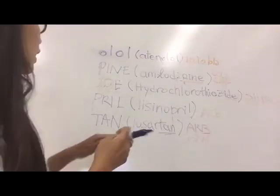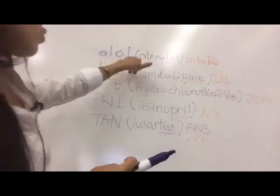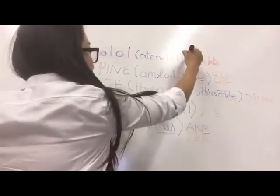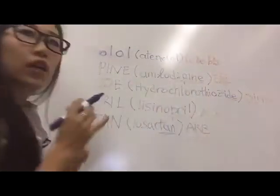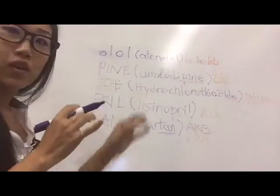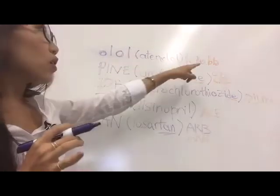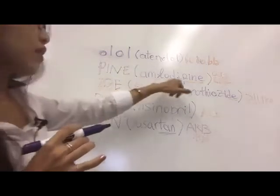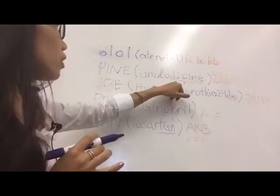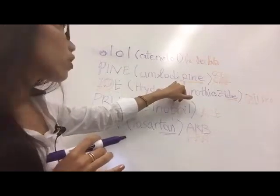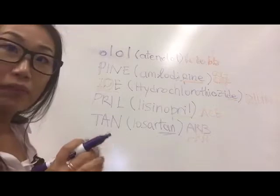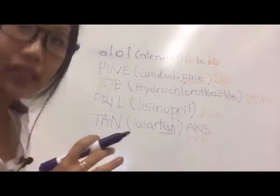So let me just recap really quickly right now. '-Olol', you write it opposite like you are in the mirror and it's gonna give you an 'L-O-L-O', and if you put those two together that's gonna be a 'B' and a 'B'. Drugs that end with this are beta blockers. '-Pine', like this drug amlodipine, how do I know that this is a calcium channel blocker?